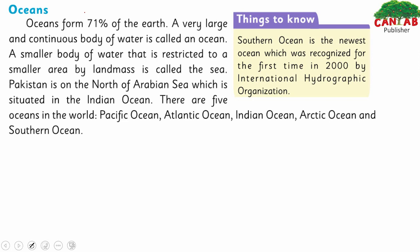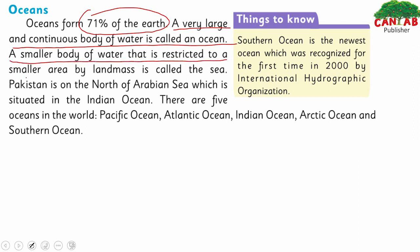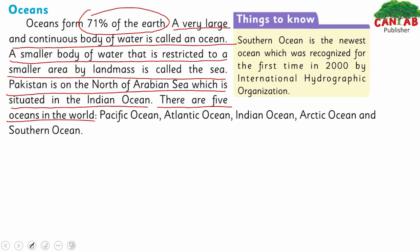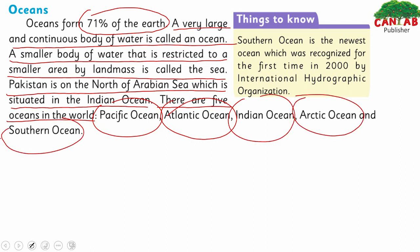Ocean forms 71% of the Earth. A very large and continuous body of water is called an ocean. As the size gets smaller, a smaller body of water that is restricted to a smaller area by landmass is called a sea. Pakistan is on the north of the Arabian Sea, which is situated in the Indian Ocean. There are five oceans in the world: Pacific Ocean, Atlantic Ocean, Indian Ocean, Arctic Ocean, and Southern Ocean.